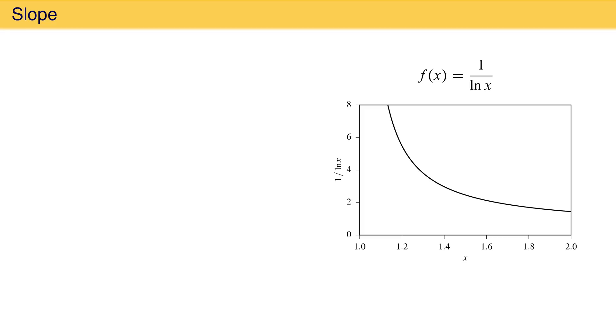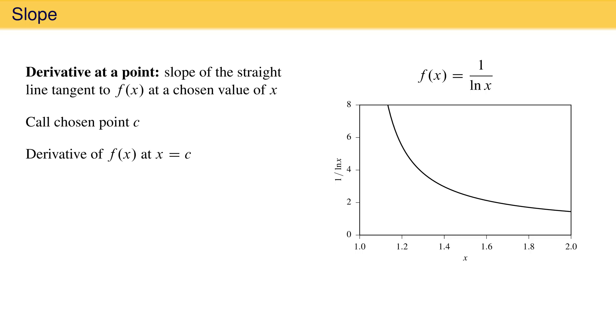A plot of this function looks like this over the interval x equals 1 to x equals 2. The derivative of this function at a point in the given interval is the slope of the straight line that is tangent to the function f at the point we have chosen. We can state this more compactly by calling the chosen point c. The derivative of a function f at the point x equals c is usually written as f prime evaluated at the point c.